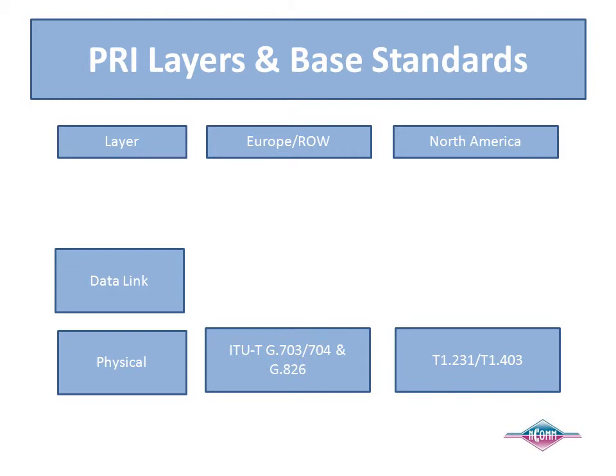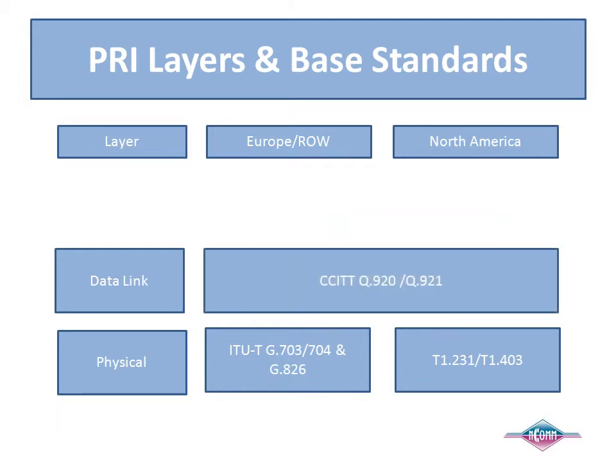Layer 2, the data link layer, is responsible for guaranteeing packet delivery for Layer 3. Layer 2 establishes and maintains the data link, packetizes and manages the packet sequence numbering, and is in charge of packet retransmission, as well as verifying end-to-end connectivity with periodic keep-alive messages. The PRI standards that pertain to Layer 2 include CCITT Q.920 and Q.921. There are no significant differences between Euro and North American ISDN at this layer.